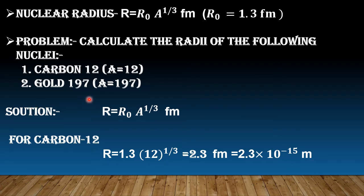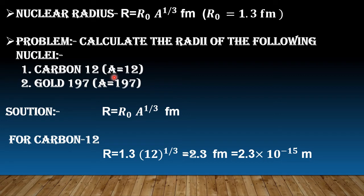I have shown you how to find the radius for Carbon. You need to do Gold-197 yourself. When solving any numerical, first read the statement carefully, then separate: number one, what is provided; number two, what you need to find out. This simplifies 80% of the question automatically. Then identify which formula to use, put in the values, simplify, and find the answer. So find Gold-197's radius yourself — if you have any doubt or problem, ask me.